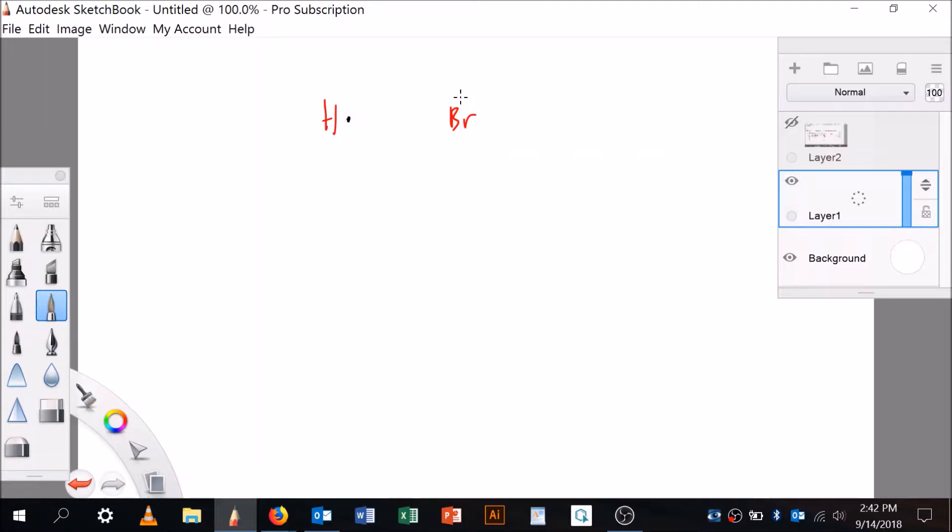So hydrogen's in group one, so it's only going to have one electron inside a shell. Bromine's in group seven, so it's going to have seven. Watch this. One, two, three, four, five, six, seven. Okay,